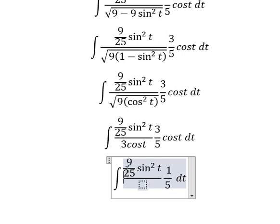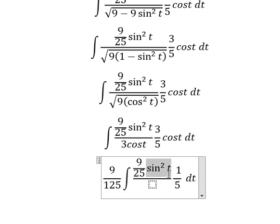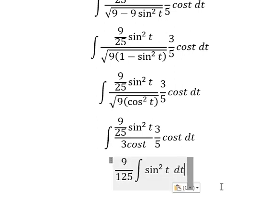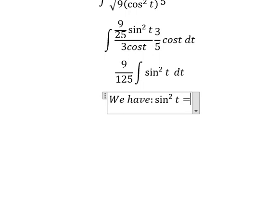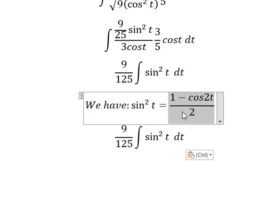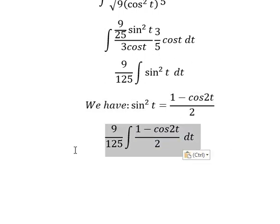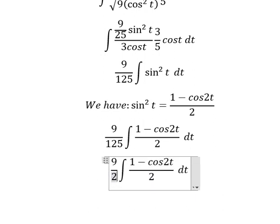Multiplying these terms together, we get 9 over 125, leaving only sin²(t). We apply the half-angle formula: sin²(t) equals (1 minus cos(2t)) / 2. Multiplying 2 by 125 gives 250 in the denominator.